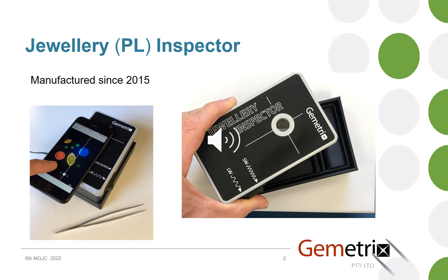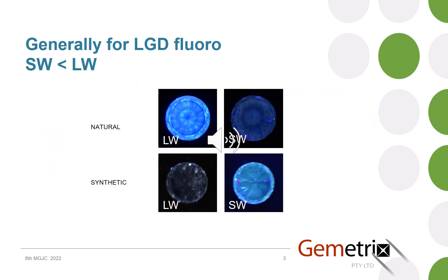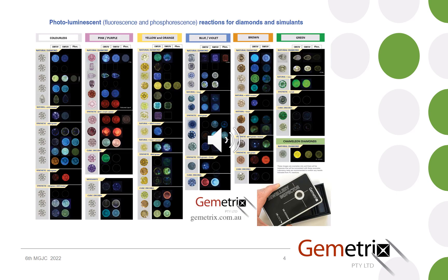A quick recap on the instruments available from Geometrics for looking at fluorescence. The main one is a Jewelry PL Inspector which enables shortwave and longwave viewing of a diamond or other gem. The instrument allows observation, usually through a smartphone, of the longwave and shortwave reaction. The general rule of thumb is that with a natural diamond the longwave intensity is greater than that of the shortwave.